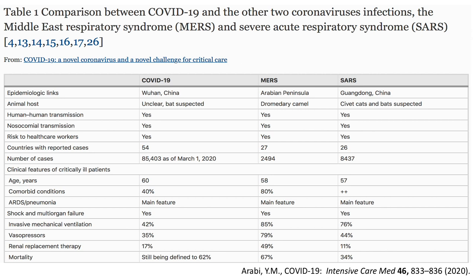A comparison table looks at clinical characteristics of COVID-19 versus other coronaviruses. For COVID-19, elderly patients were primarily affected. Comorbid conditions were observed more with MERS-CoV. ARDS and pneumonia were common among all three virus types. Complications like shock, multi-organ failure, and invasive mechanical ventilation were much higher with MERS-CoV. Vasopressor use and renal replacement therapy were also higher for MERS-CoV. Regarding mortality, COVID-19 is predicted at 6.2%, MERS-CoV at 67%, and SARS-1 at 34%.